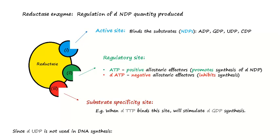Be careful: uracil deoxyribonucleotide is not used in DNA synthesis. As a result, the cell will convert it using a methyl group from tetrahydrofolate to form thymine deoxyribonucleotide. In this way, the cell produces the quantity needed of deoxyribonucleotides.